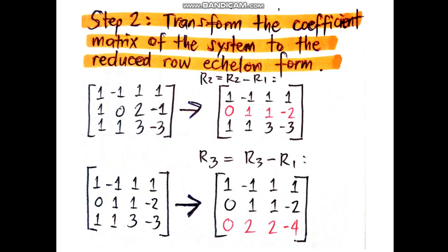To get R2, we subtract R2 and R1. The new values for the second row are 0, 1, 1, -2, while the first and third rows are retained. Now to get the next matrix, R3 minus R1 to get the third row. The new values of the third row are 0, 2, 2, -4.